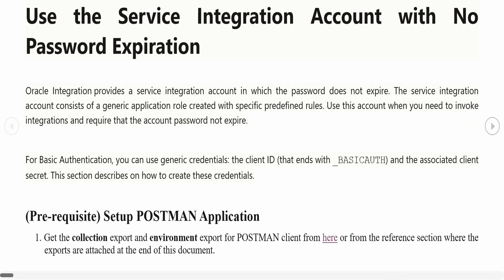Usually when we create an integration and expose our REST or SOAP services, we authenticate users with basic authentication where the user enters a username and password to consume our integration. This also applies whenever the integration is making a call to Oracle Integration's built-in REST APIs — at that time we also configure our connections with username and password. This increases the overhead on IDCS, as it has to validate the user credentials at each and every point.